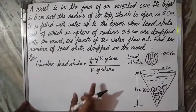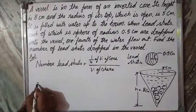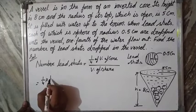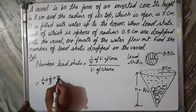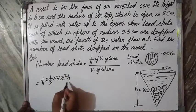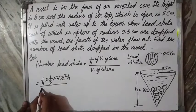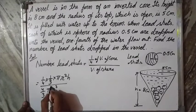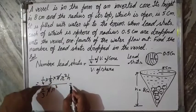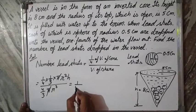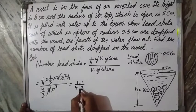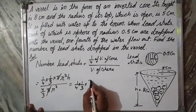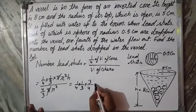Volume of cone: 1 upon 4 times 1 upon 3 πr²h. Volume of sphere: 4 upon 3 πr³. Now π cancels, and this fraction is 1 upon 4 times 1 upon 3, and this fraction is reciprocal, so this is 3 upon 4.